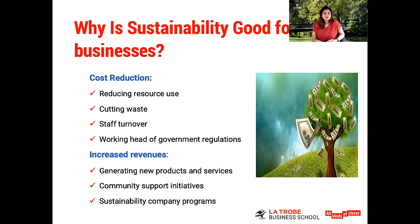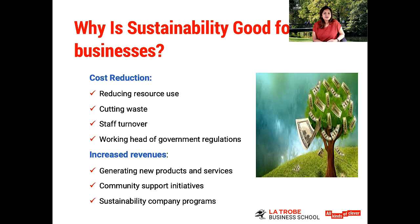Starting with cost reduction, operating costs can be cut through improved efficiencies that come from reduced resource use and cutting waste — the basic idea that if you switch off the lights, you'll save on your energy bills. You could also do so by reducing staff turnover associated with more worker-friendly policies, remembering the social pillar in that context. Addressing sustainability issues in a planned and systematic way can also help in getting ahead of government regulations, which can be more cost-effective in the medium and long term.